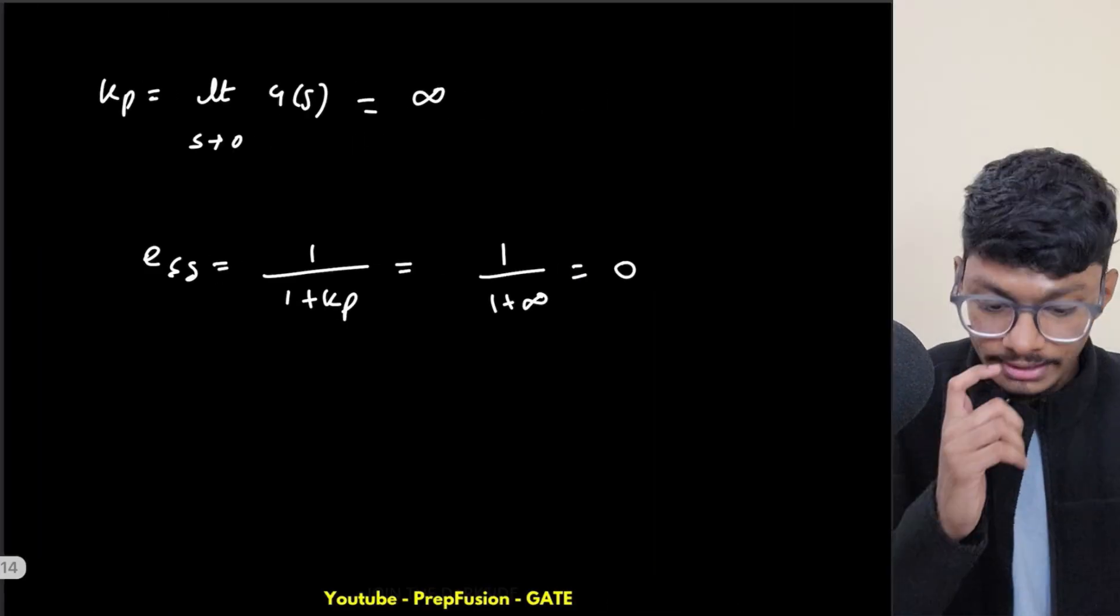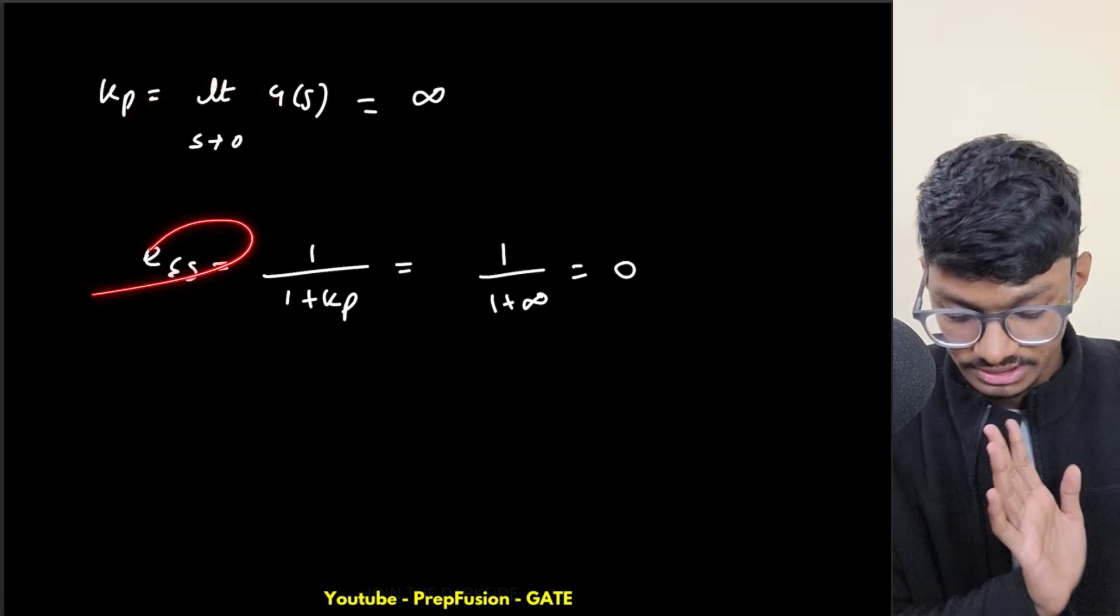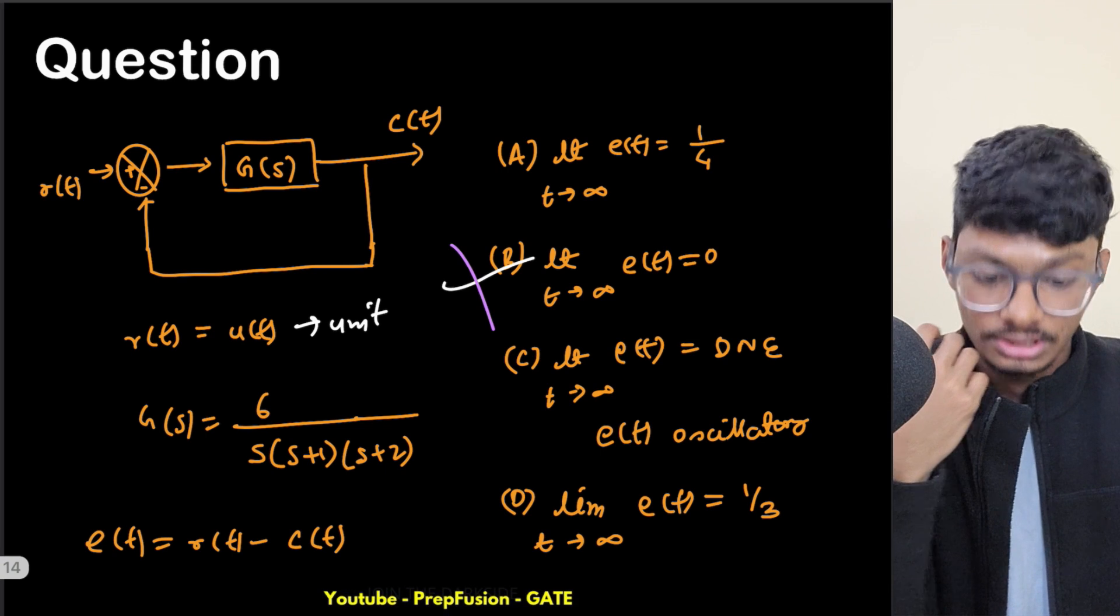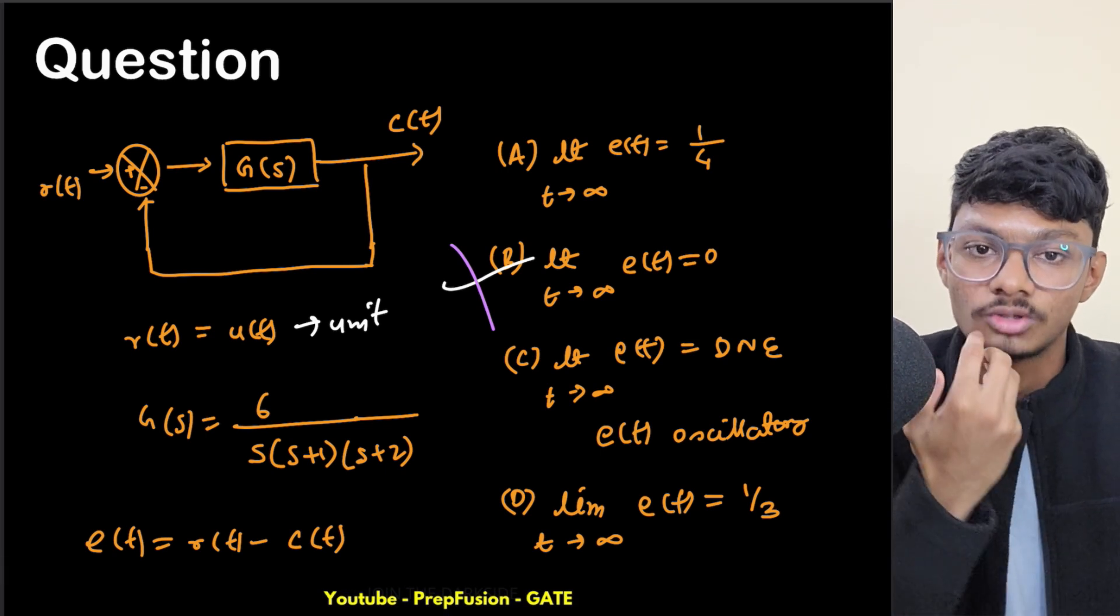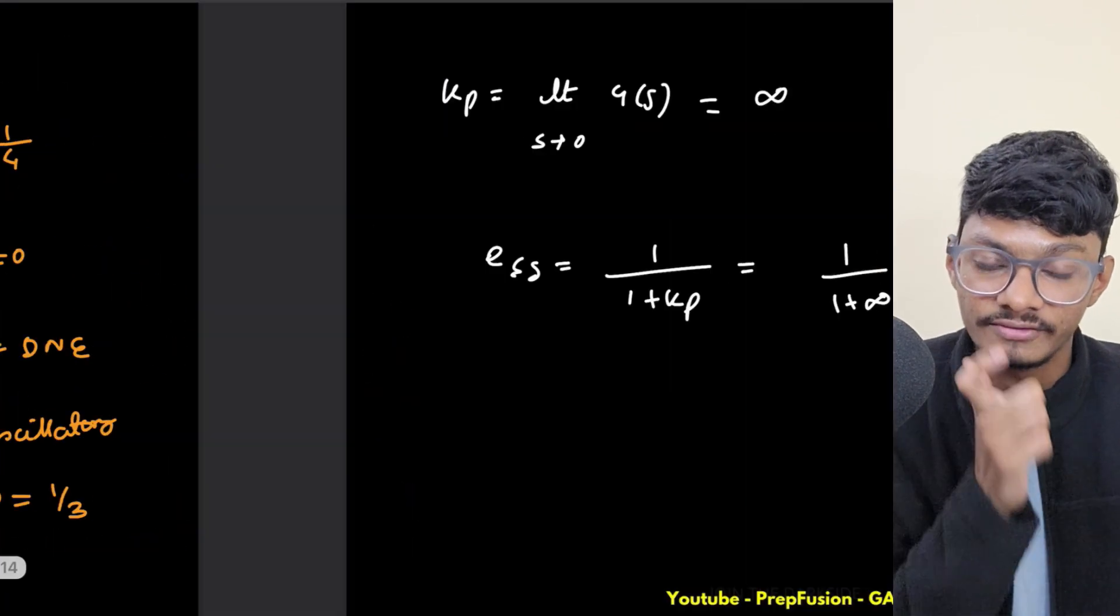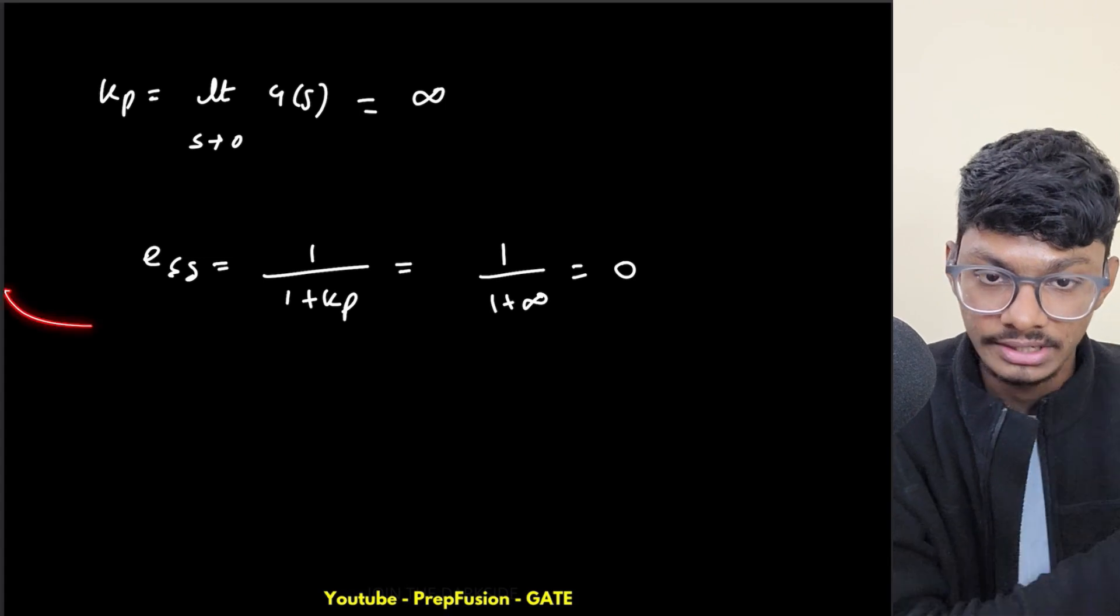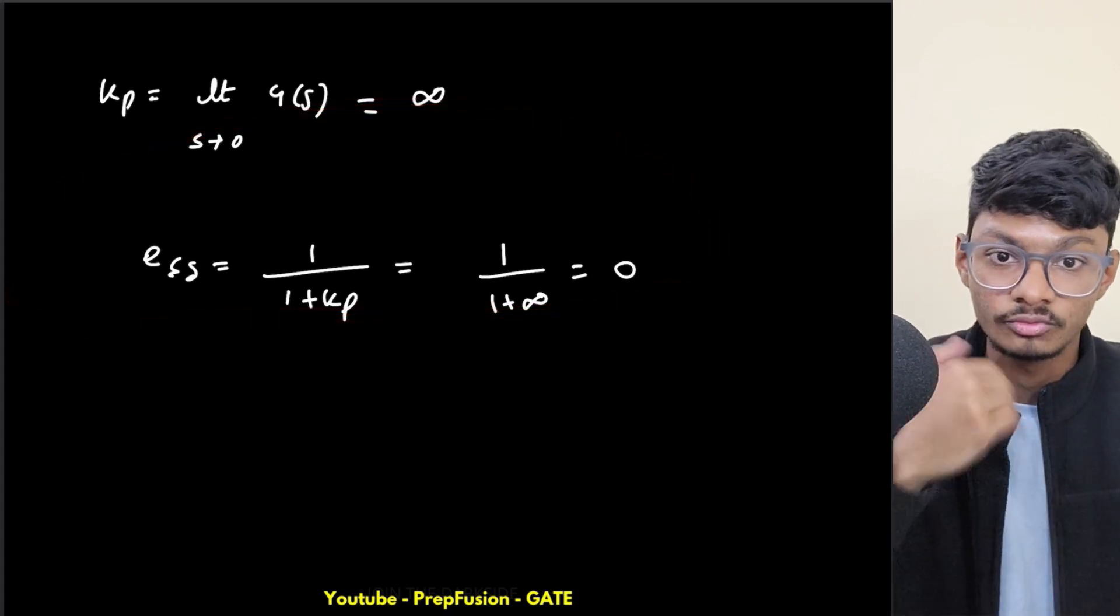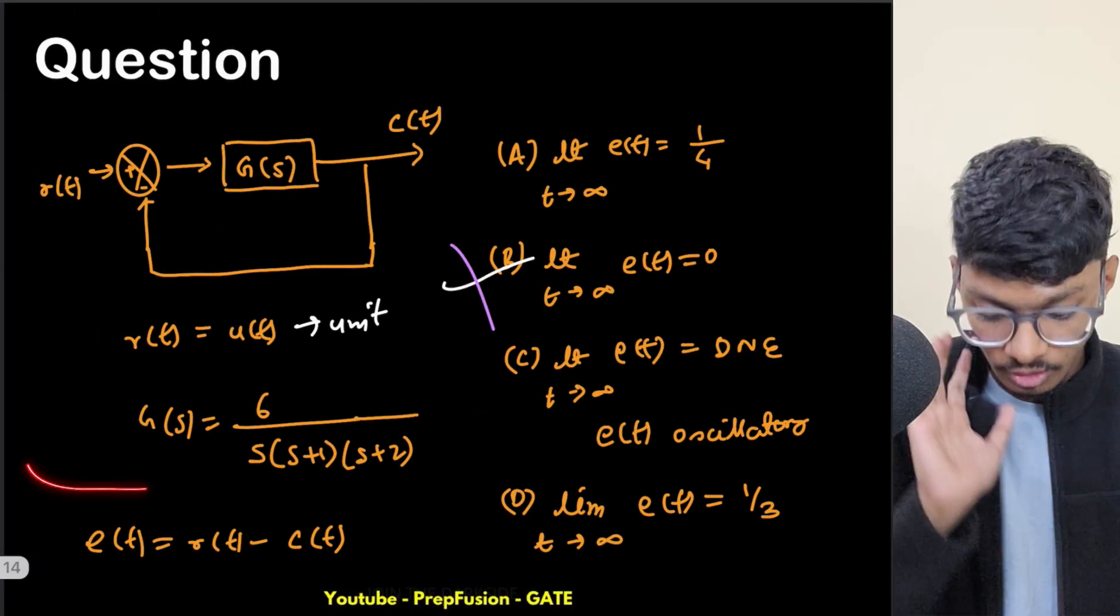So this is 1 plus infinity, which equals 0. Now you will mark option B, but this is wrong. Why? Because just remember one thing: we can only apply this limit s tends to 0 formula when the system response is stable. If the response itself is not stable, then I cannot apply my final value theorem. All of these formulas are coming from the final value theorem, and if the final value theorem isn't applicable, we can't apply anything. We have to solve from the basics.